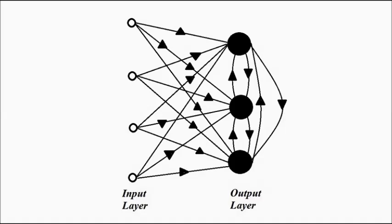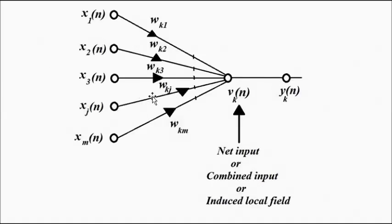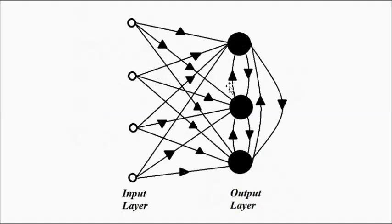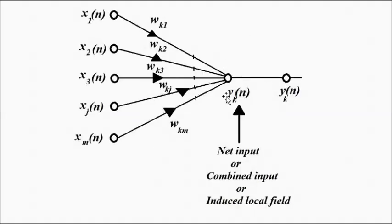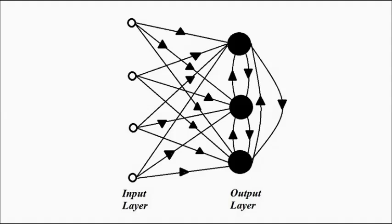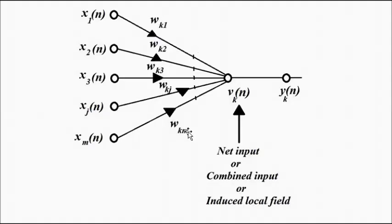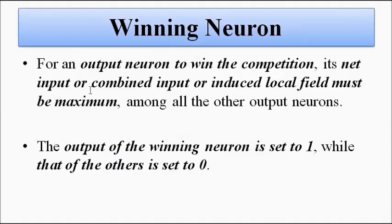In the nodal representation, if we pick a particular neuron, the net input is the sum of all the individual inputs given to that neuron multiplied by their synaptic weights. That total is called the net input, combined input, or induced local field. The neuron with the maximum net input — or combined input or induced local field — is the winning neuron.